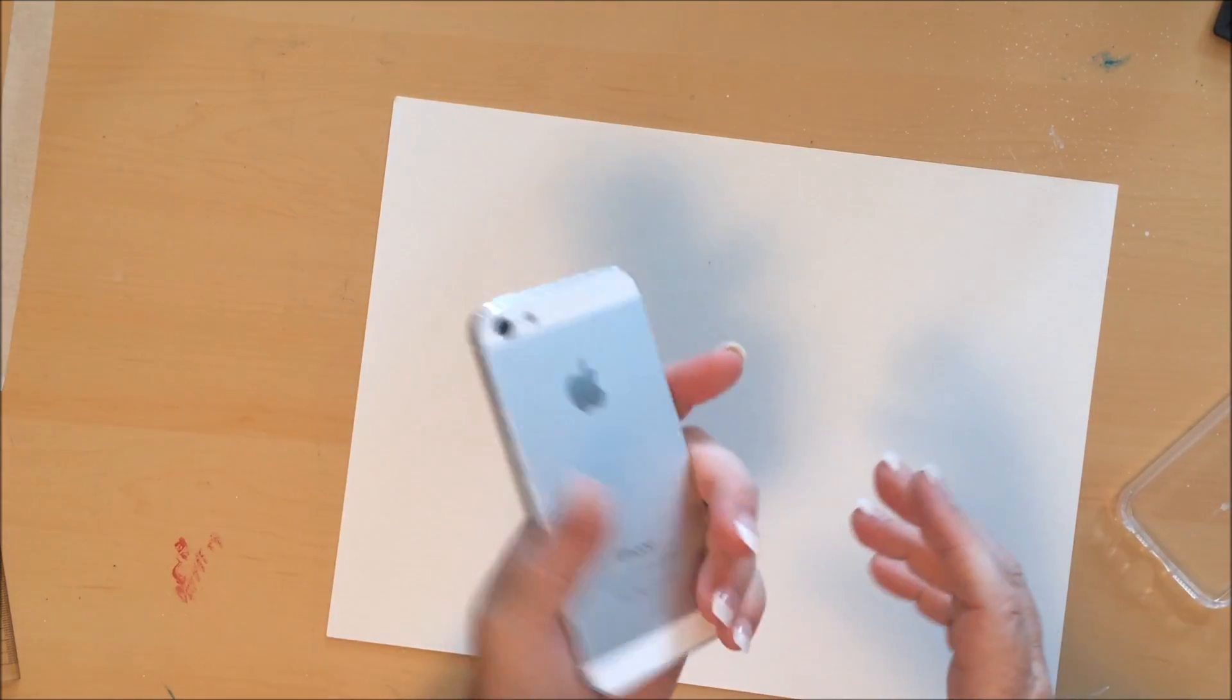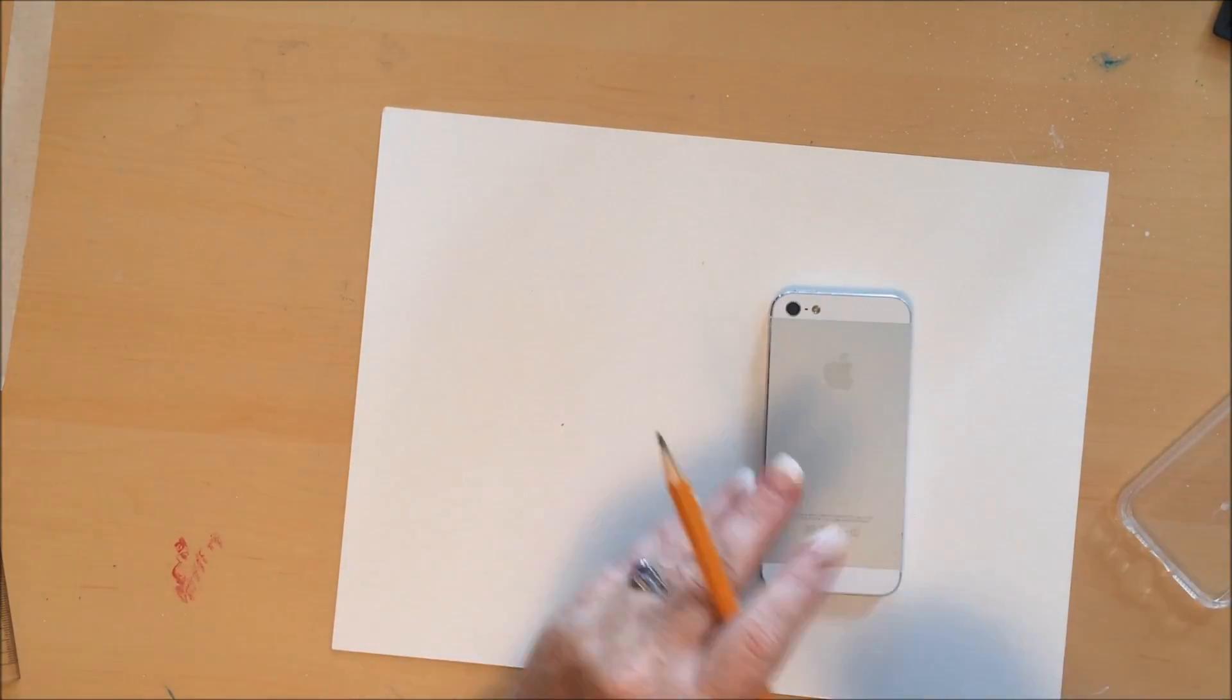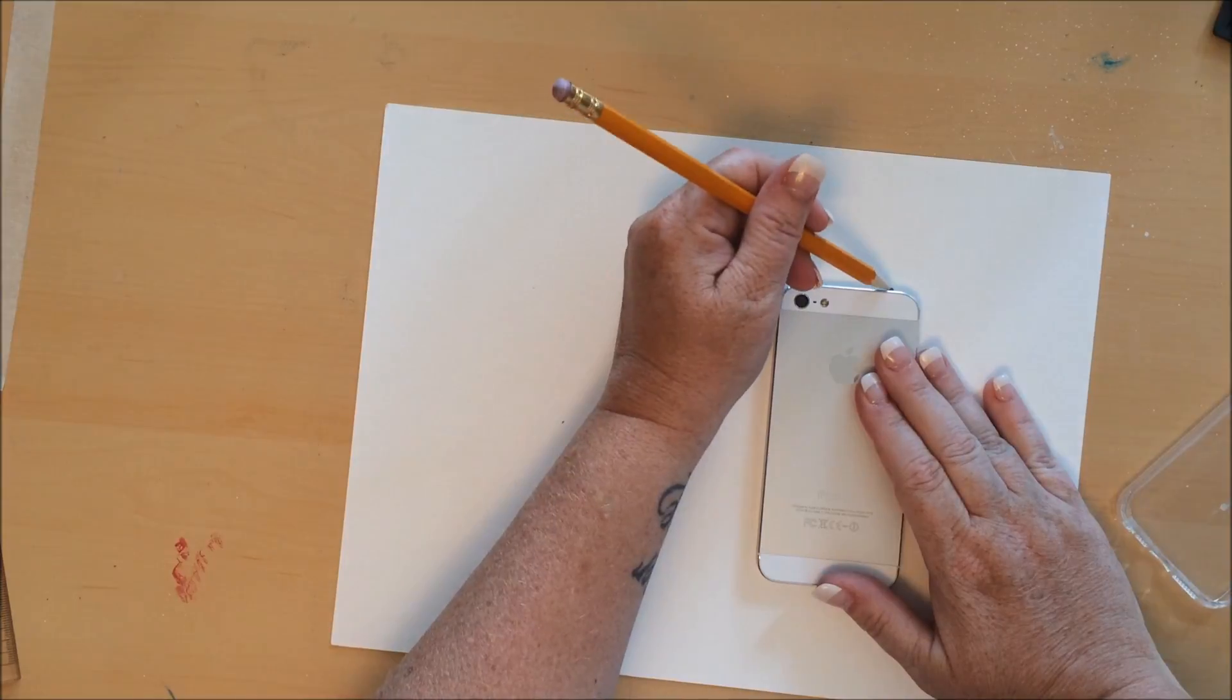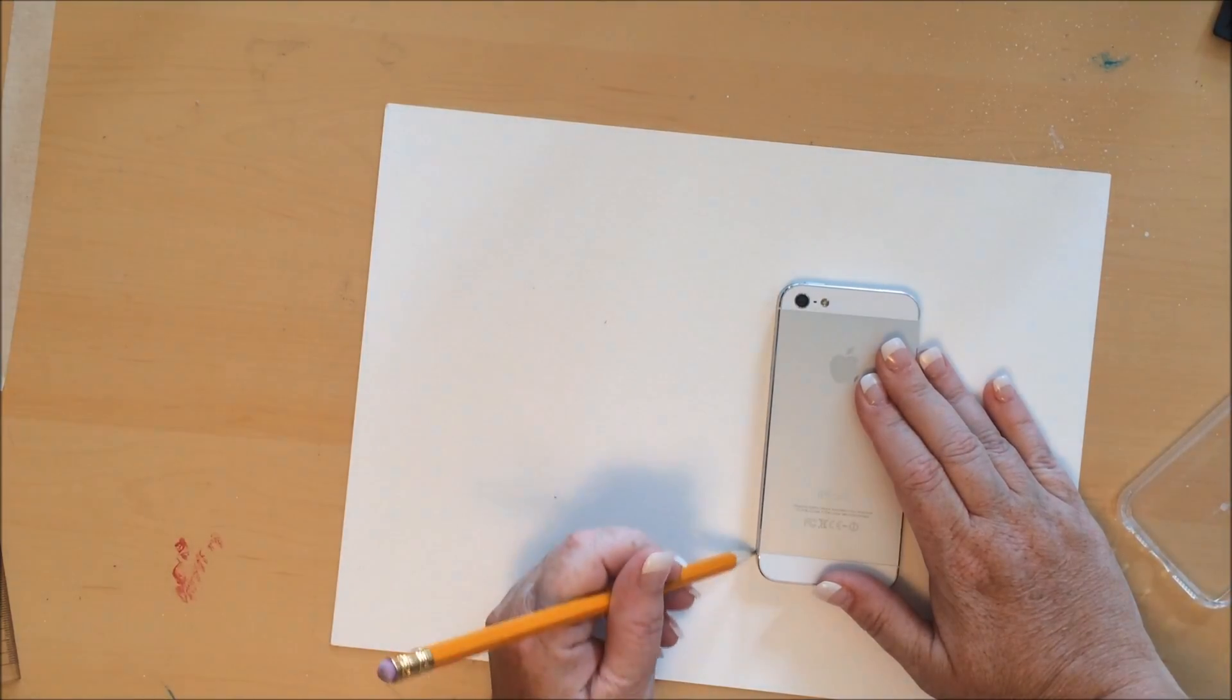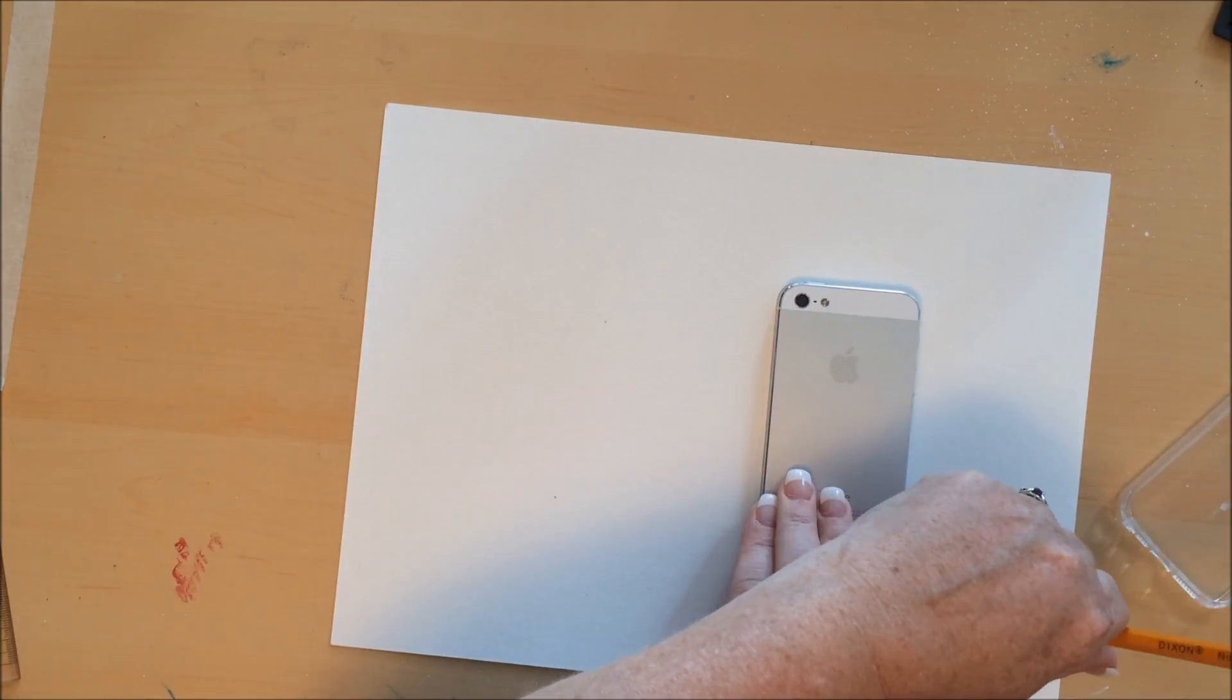So what you're going to do to get started is take your phone—I've got an iPhone 5, you can get them in different sizes—and you're going to trace it onto a piece of paper. Just give it a good trace here.